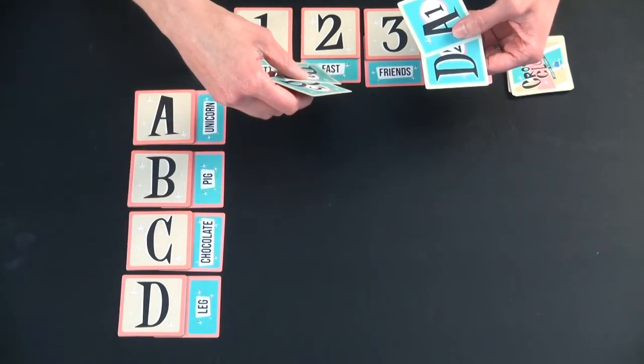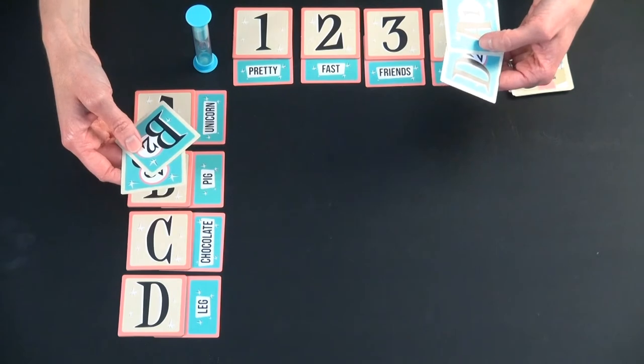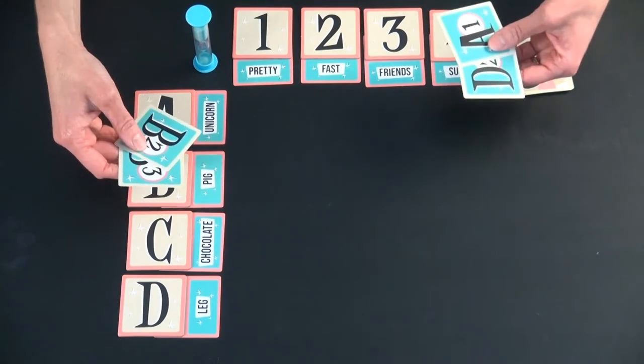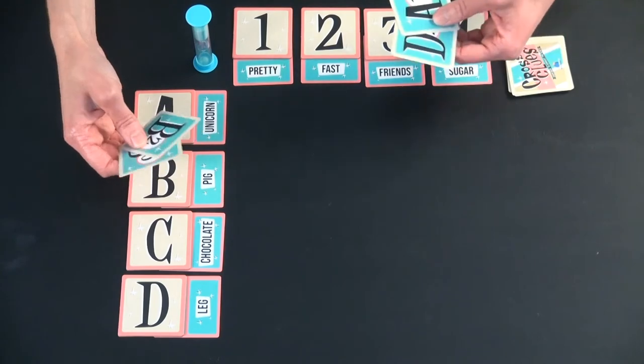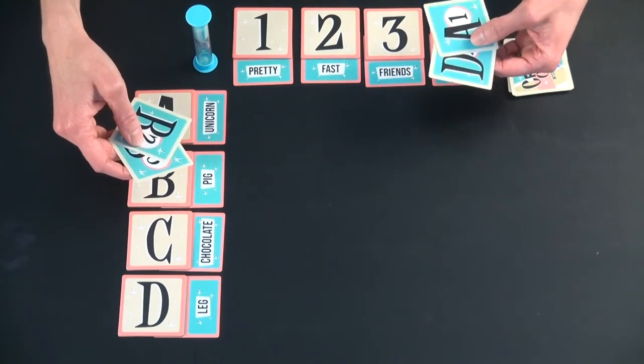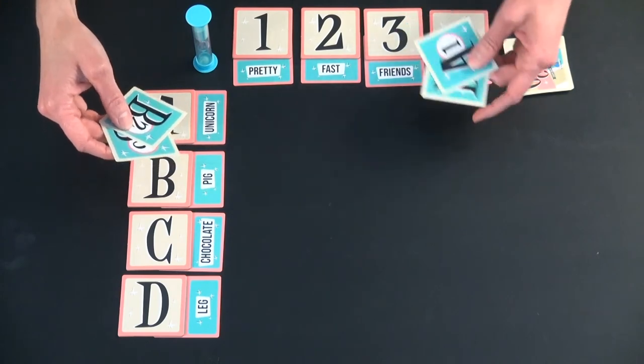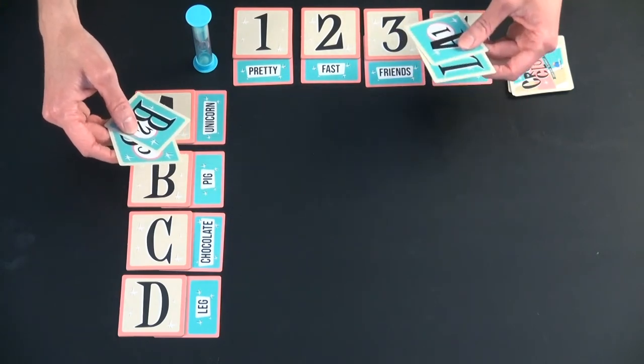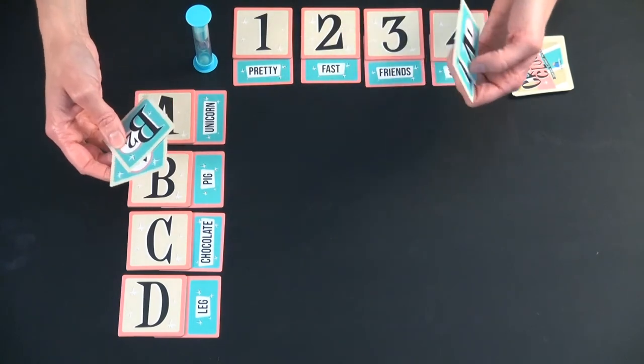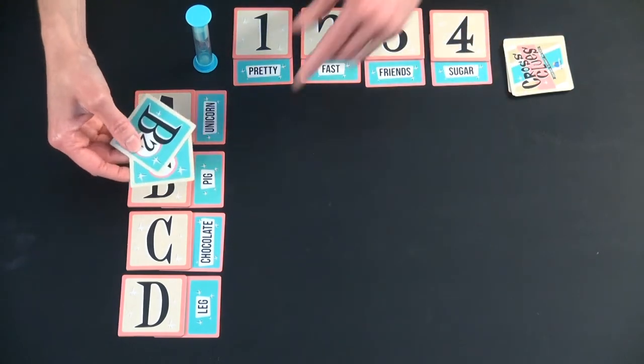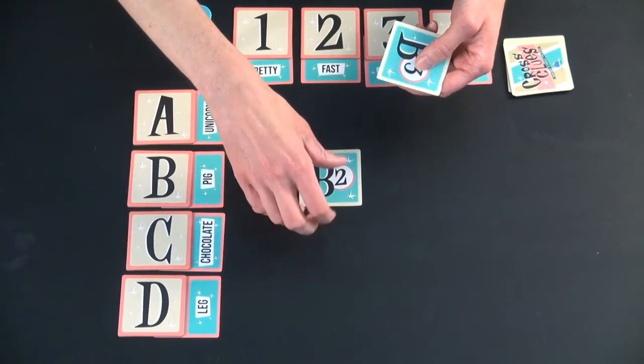So this person has both pig and fast, so they might say greased, like a greased pig, and they hope that from that, the other players are allowed to openly discuss things. They can't say anything, and if it's just the other player, they're on their own, but with more players, they talk about it and then they come to a decision. They say, okay, we think it is B2, and if they're correct...